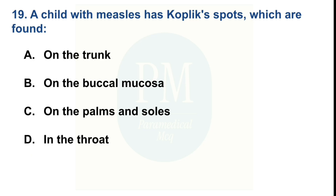A child with measles has Koplik spots, which are found — Option A: on the trunk. Option B: on the buccal mucosa. Option C: on the palms and soles. Option D: in the throat. The correct option is Option B — on the buccal mucosa.